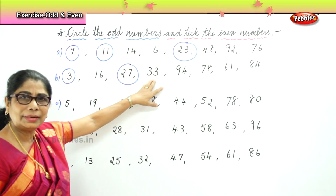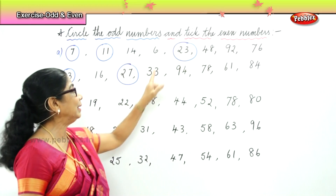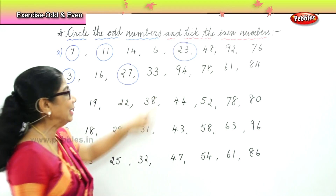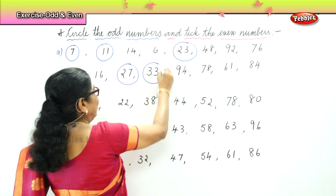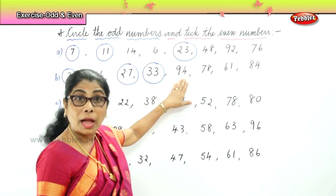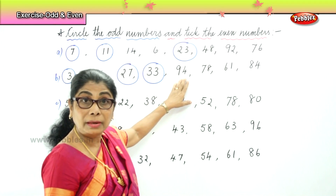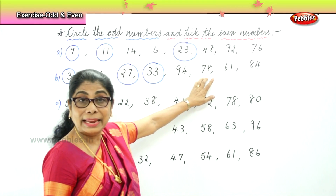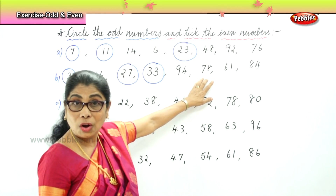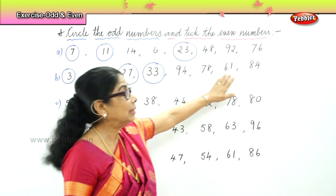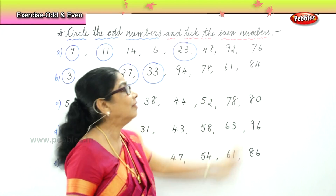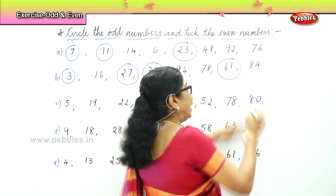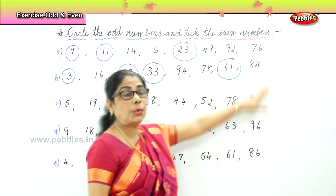Thirty-three — what about thirty-three? It ends in three — is it an odd number? Yes, thirty-three is an odd number. Is ninety-four an odd number? It ends in four — no. Seventy-eight ends in eight — is it an odd number? No. Very good. Sixty-one ends in one — very good, so it's an odd number. Is eighty-four an odd number? No.